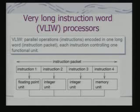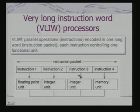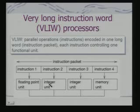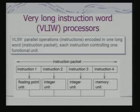VLIW (very long instruction word) processors encode parallel operations in one long word, with each instruction controlling one functional unit. An instruction packet contains multiple instructions — instruction 1, 2, 3, 4 — activating different functional units in parallel. This is an extension of the parallel instruction feature found in C55X, but in VLIW processors it is explicit. With multiple units, long instruction words can specify multiple instructions for parallel execution. Such an architecture requires a large register file to feed multiple functional units.